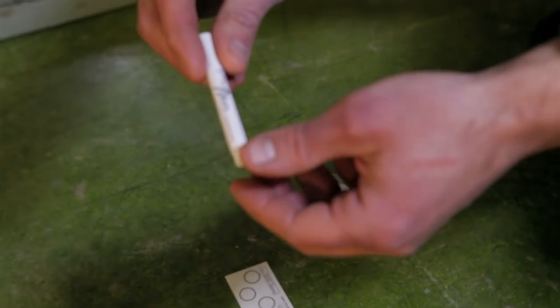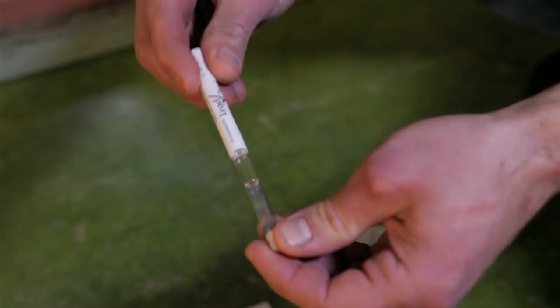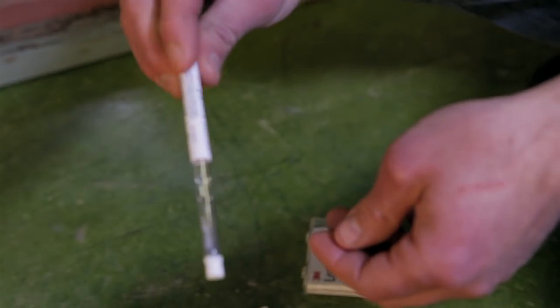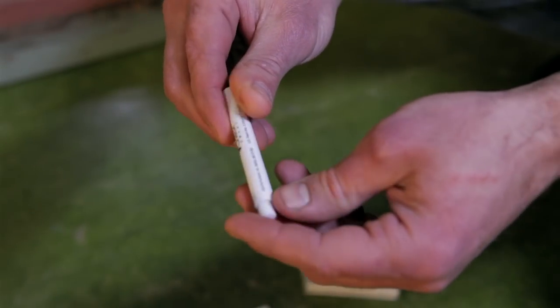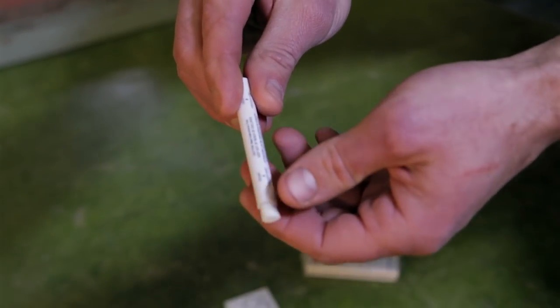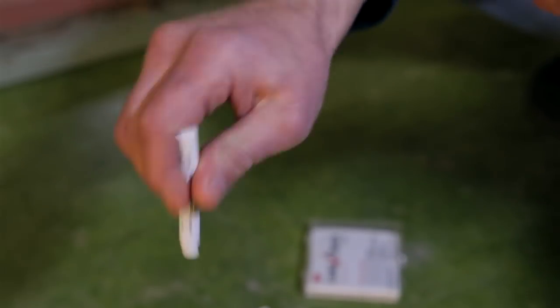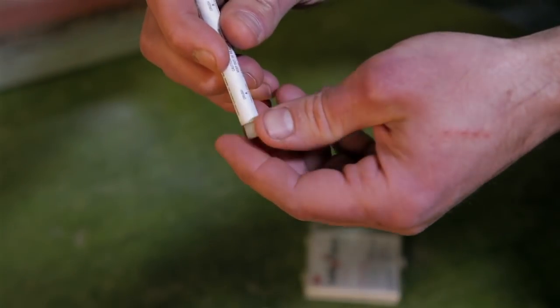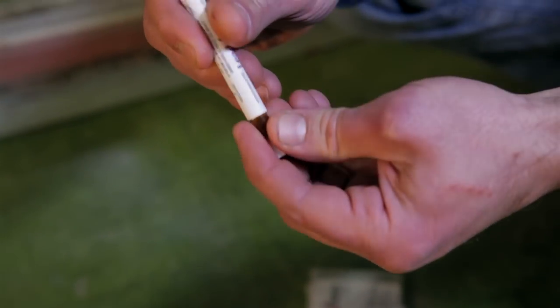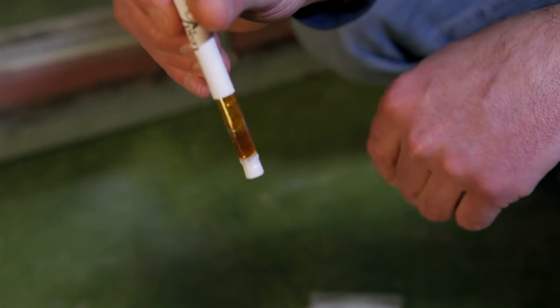The lead check swab consists of two chemicals, a solid and a liquid, with directions right on the packaging. You simply crush A and crush B, and then mix the two together. When you've finished mixing, you should have an amber-colored liquid inside the vial.